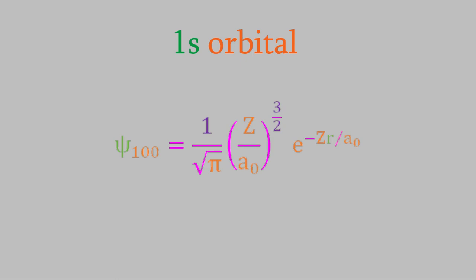Here's that wave function. There are a few interesting things to notice. First, z is equal to the charge on the nucleus — for hydrogen, that's equal to 1. Another thing to notice is that the only variable on the right side is r; everything else is a constant. That means the value of the wave function only depends on r, the distance from the nucleus. The angle does not matter — in other words, this orbital is spherical, which is exactly what we expect for an s orbital.